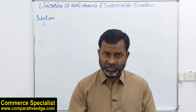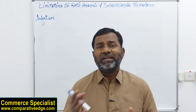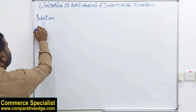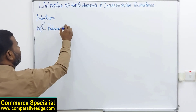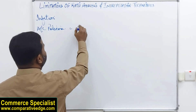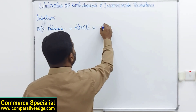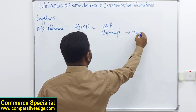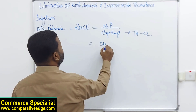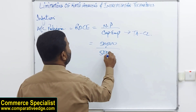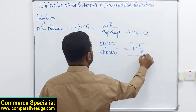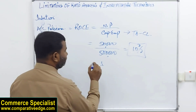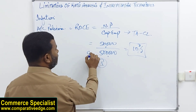Another reason why ratios may mislead us is the adoption of accounting policies. Accounting concepts, conventions, and standards are flexible. For example, my favorite ratio — return on capital employed (ROCE) — is calculated as net profit divided by capital employed, where capital employed equals total assets minus current liabilities. If net profit is £50,000 and capital employed is £500,000, ROCE is 10%.